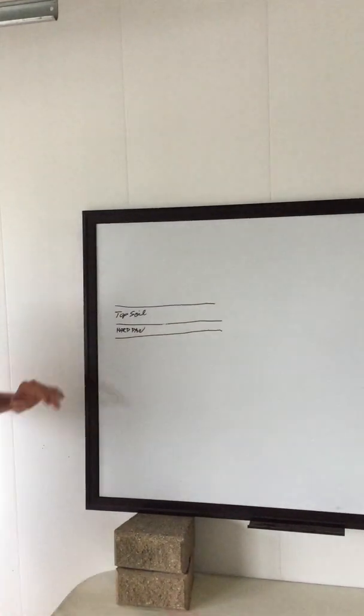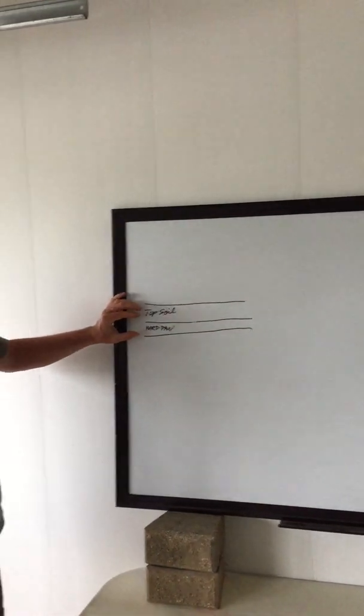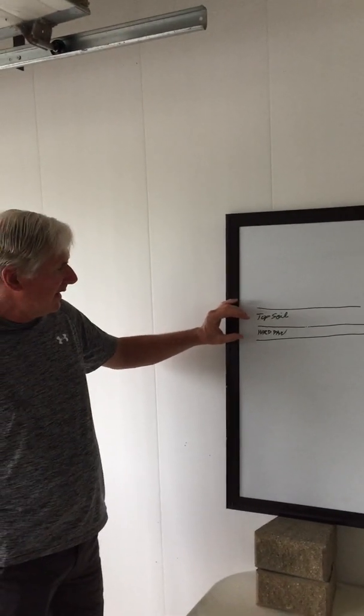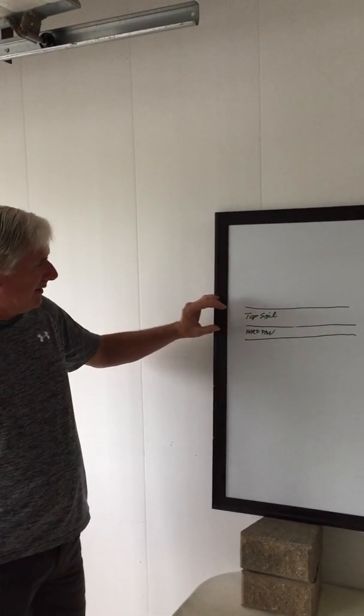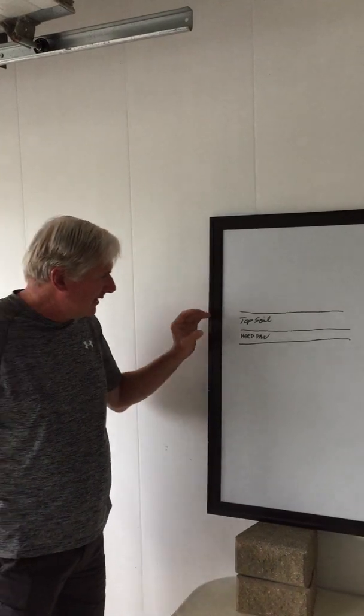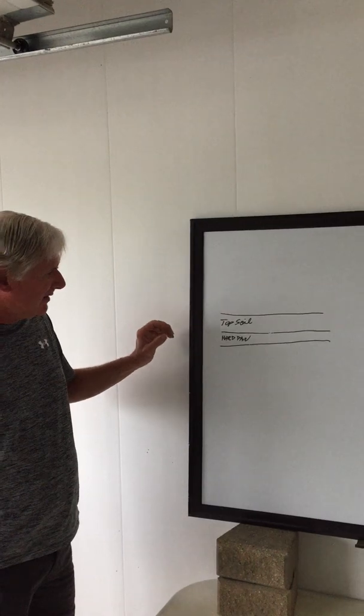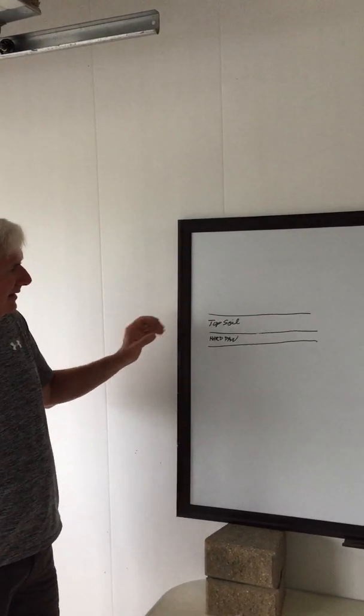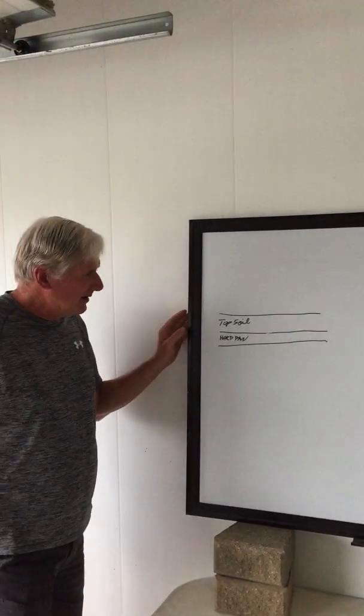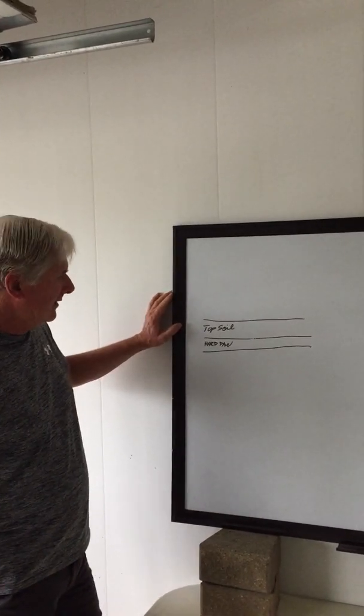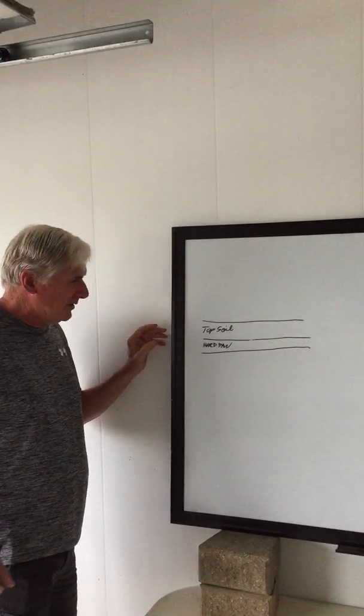Now hardpan is a layer of soil where the soil particles are very closely adhered to each other and there's minimal, if any, airspace. So it's a very dense layer of soil and it is impervious to both the movement of water and impervious to the diffusion of oxygen.